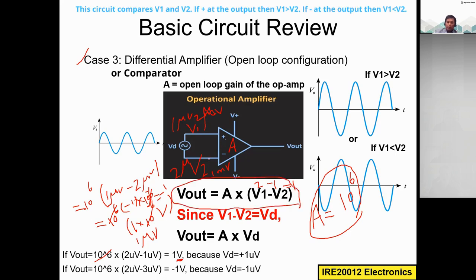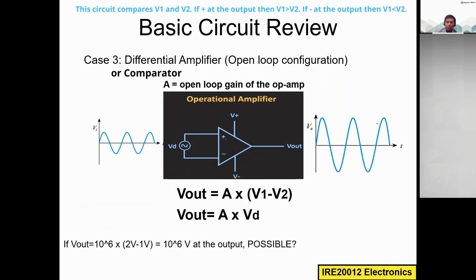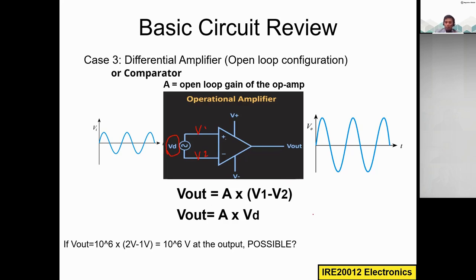Whatever voltages you apply to the two input terminals, use this formula: if you get a negative output, there is a phase shift; if you get a positive output, there is no phase shift. We can simplify V1 − V2 as Vd — the differential voltage between V1 and V2. So the output formula is: V_out = A × Vd. The typical value of the open-loop gain A is 10^6.